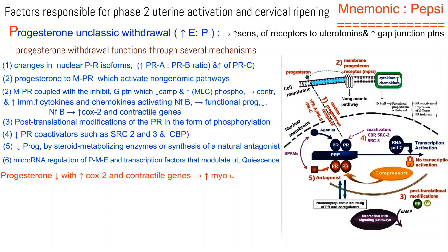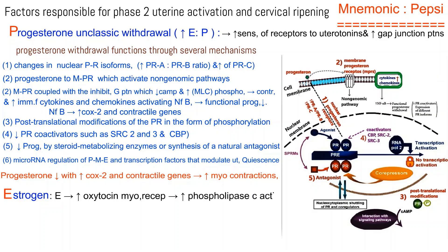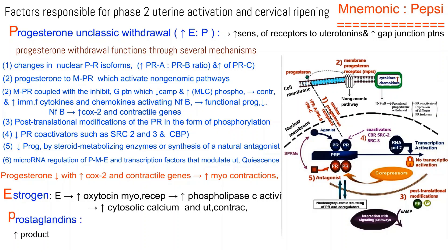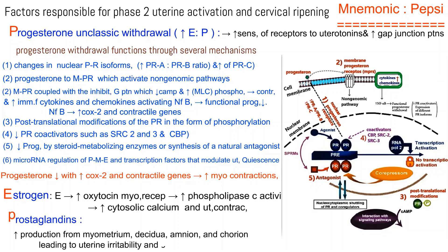E: Estrogen leads to expression of oxytocin myometrial receptors, resulting in increased phospholipase C activity, leading to increased cytosolic calcium levels and uterine contractility. P: Prostaglandins — increased production from myometrium, decidua, amnion, and chorion, leading to uterine irritability and cervical ripening.